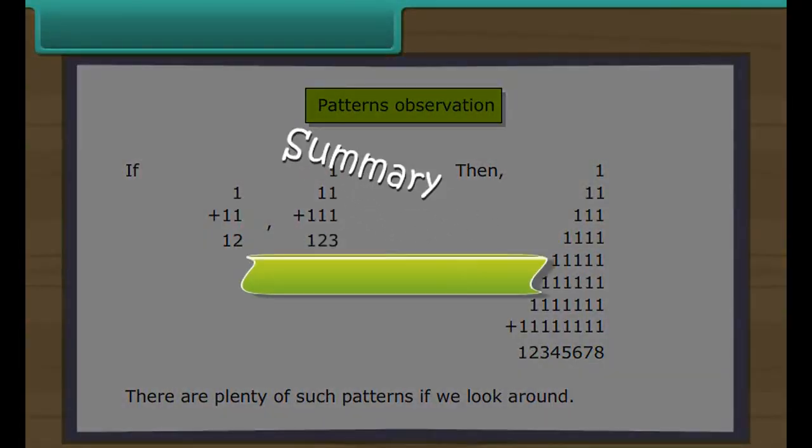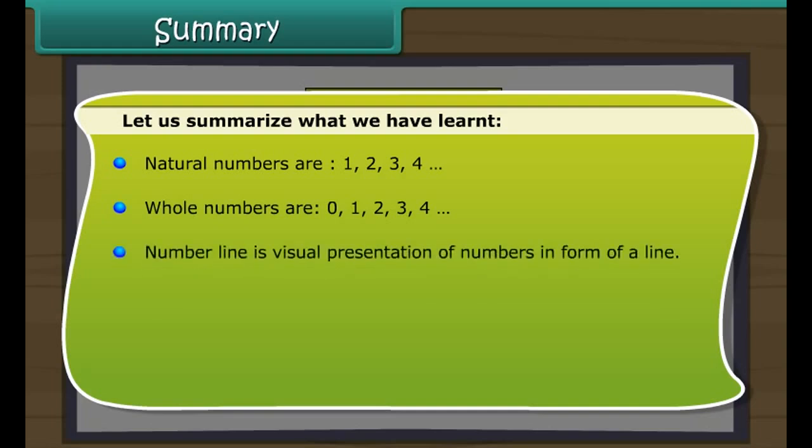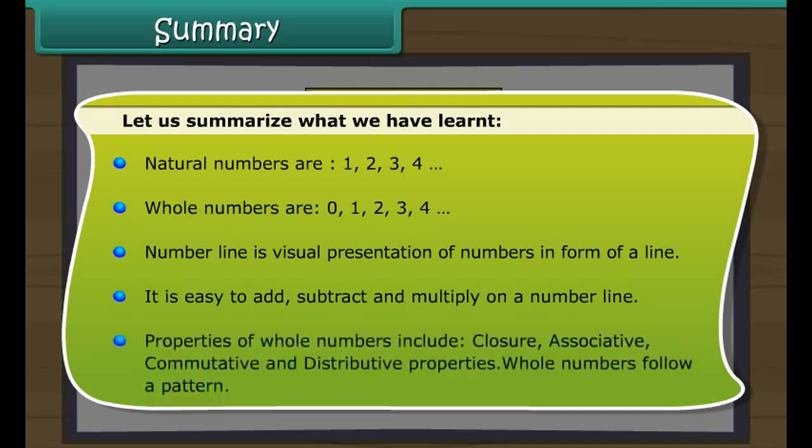Summary. Let us summarize what we have learnt. Natural numbers are 1, 2, 3, 4. Whole numbers are 0, 1, 2, 3, 4. Number line is visual presentation of numbers in form of a line. It is easy to add, subtract and multiply on a number line. Properties of whole numbers include closure, associative, commutative and distributive properties. Whole numbers follow a pattern.